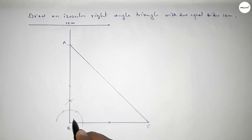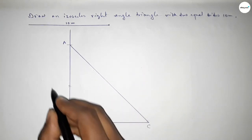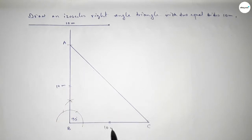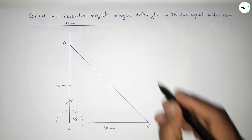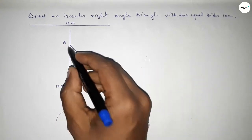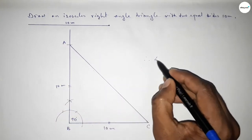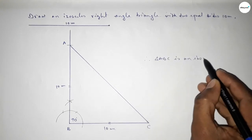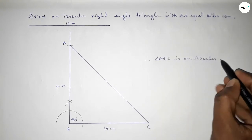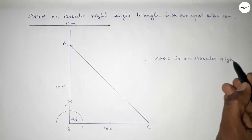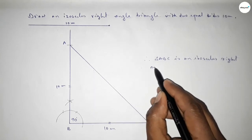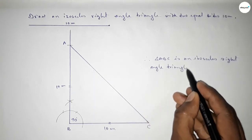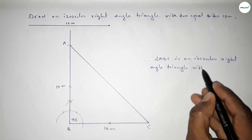Now joining A and C to get the isosceles right angle triangle. This side and this side are equal — both are 10 centimeter — and this angle is 90 degree. Therefore, triangle ABC is an isosceles right angle triangle with two equal sides of 10 centimeter.